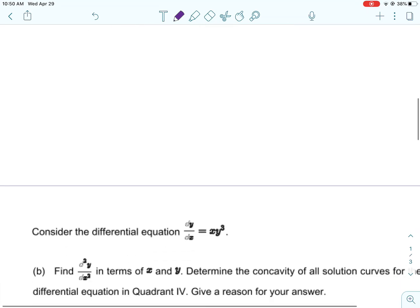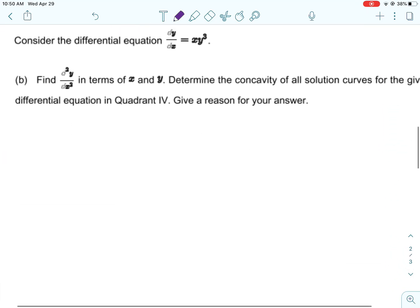And then fourth quadrant, it's 1 times negative 1 cubed, which is going to be negative 1. Okay, so on this one, the directions say you get one point for getting all the zero slopes right, and one point for getting the other. So a two-point question.